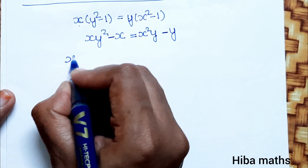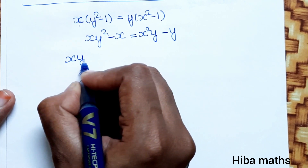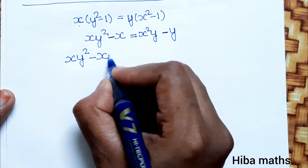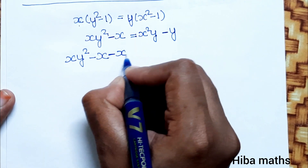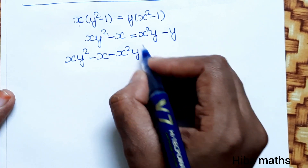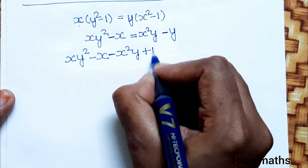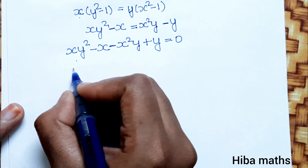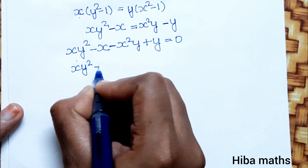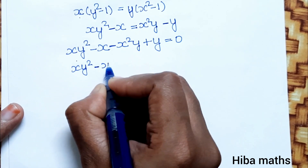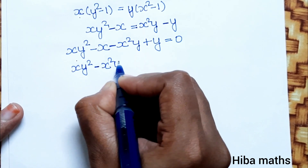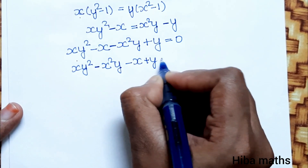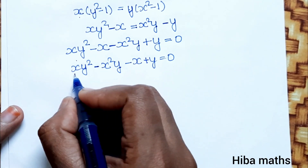Rearranging, we bring all terms to one side. We get: xy squared minus x minus x squared y plus y equals zero. Collecting terms together gives us xy squared minus x squared y minus x plus y equals zero.